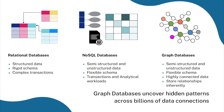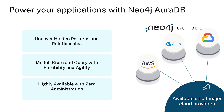Graph databases, on the other hand, enable organizations to quickly and easily uncover hidden patterns and relationships within the data across billions of data points, unlocking deeper understanding and context. Neo4j Aura is a fully managed cloud database engineered for connected data.